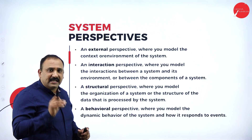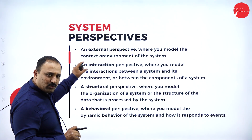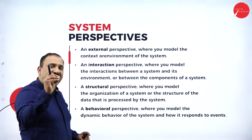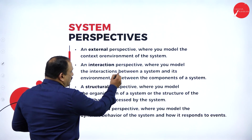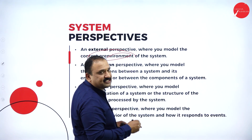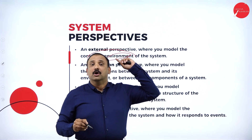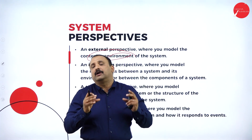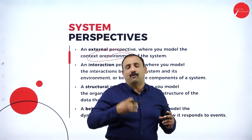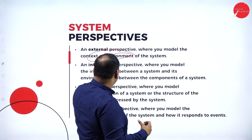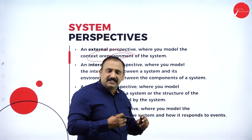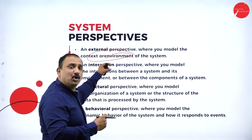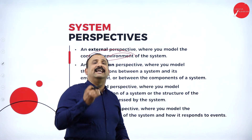Now, moving to system perspectives. In a system perspective, you have external, interaction, structural, and behavioral. First, let's understand the external perspective, where you try to understand the environment of the system — because you need to know where the system is functioning, what kind of environment it will be placed in, and what you are looking forward to in terms of building the new system. Followed by interaction, which means how the various components of the system communicate — that is the interaction model.